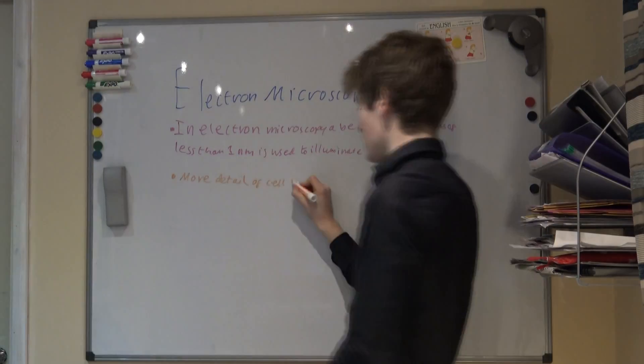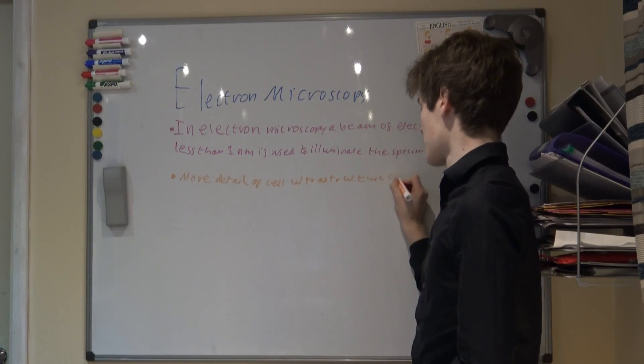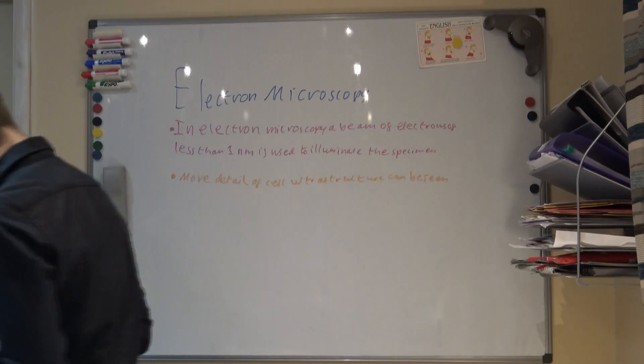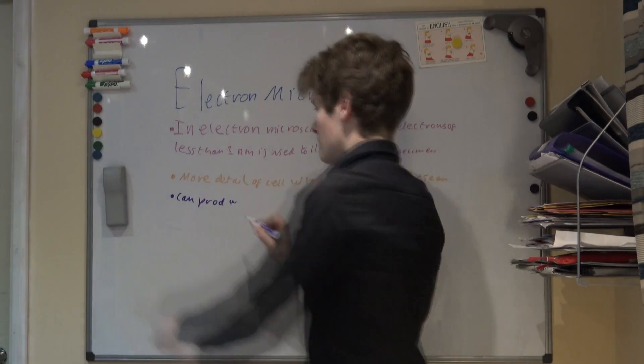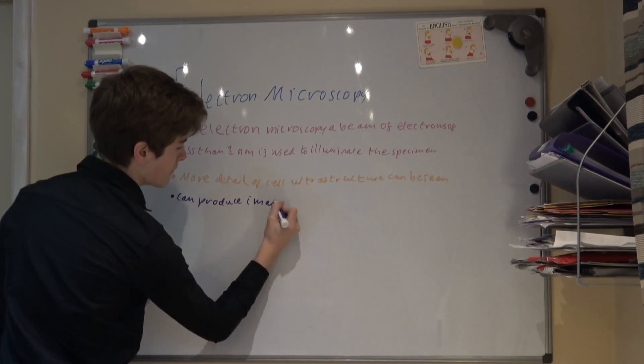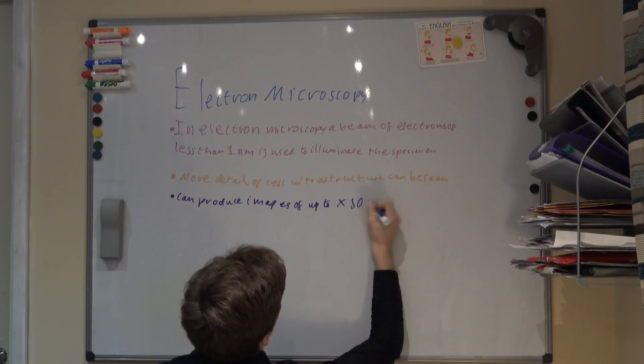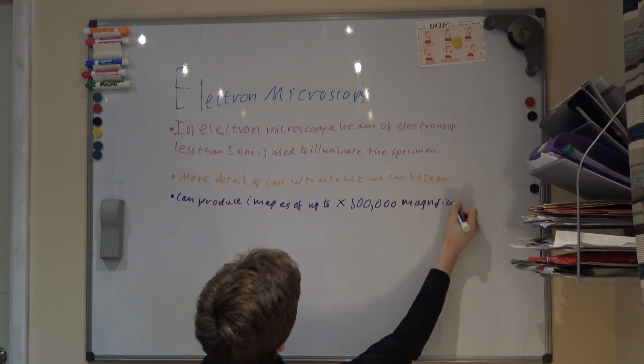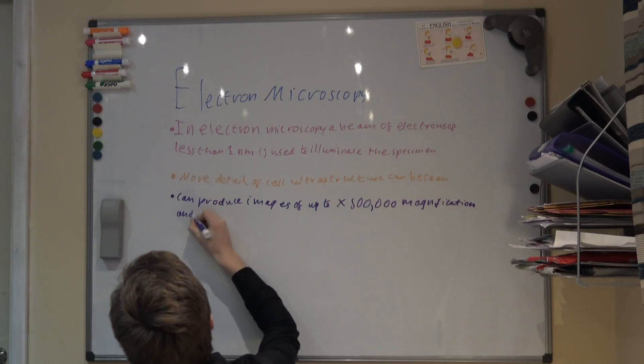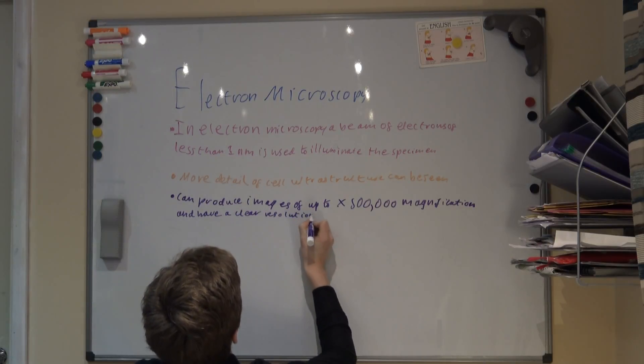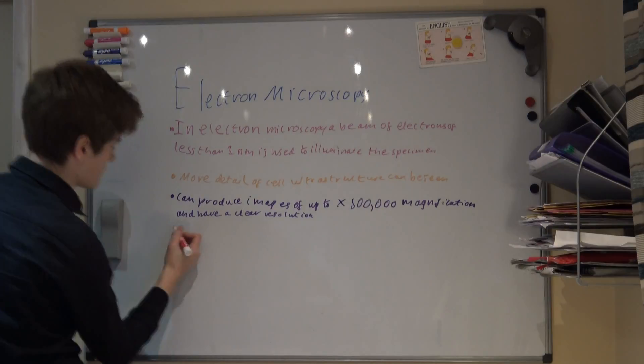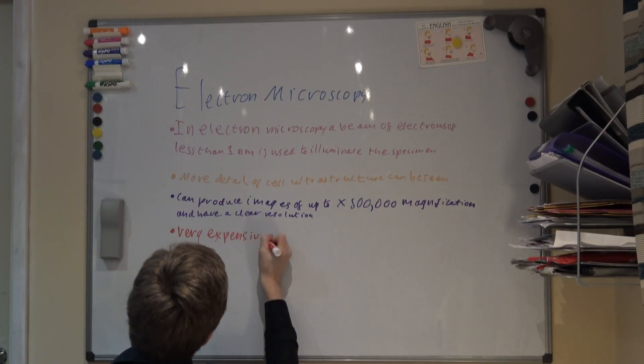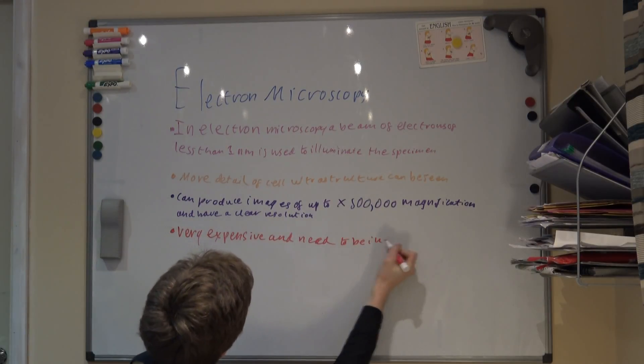They can produce images of up to 500,000 times magnification, and still have a clear resolution. Due to electrons having such small wavelengths, much more detail of the cell ultrastructure can be seen. However, unlike light microscopes, electron microscopes are very expensive, and need to be kept in a very controlled environment. There are also problems with artefacts, which are structures that are produced due to the preparation process.